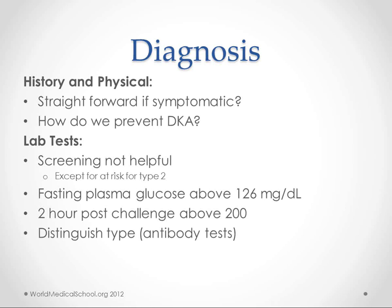The tests we can use are fasting plasma glucose — above 126 on two occasions means diabetic — a two-hour post-challenge above 200, and in 2010 they also approved hemoglobin A1c as a diagnostic test. Distinguishing type can be a little tricky sometimes in kids at risk for type 2 who present with type 1. Currently that's still based on risk factors and autoantibodies, and it's a bit of a clinical diagnosis.